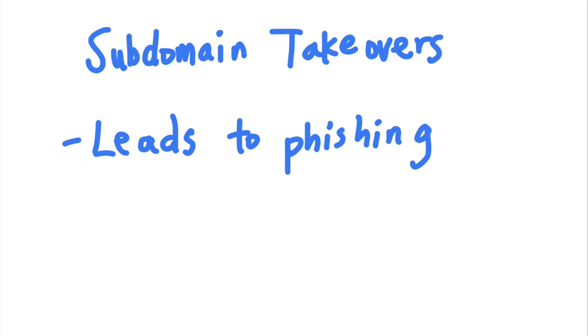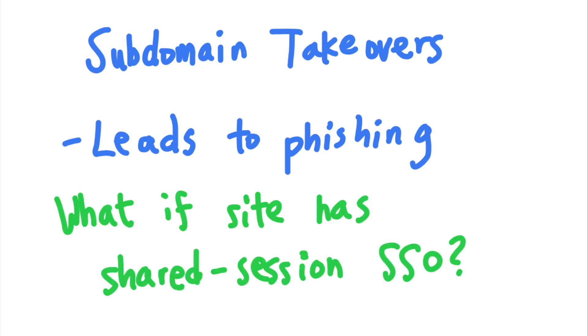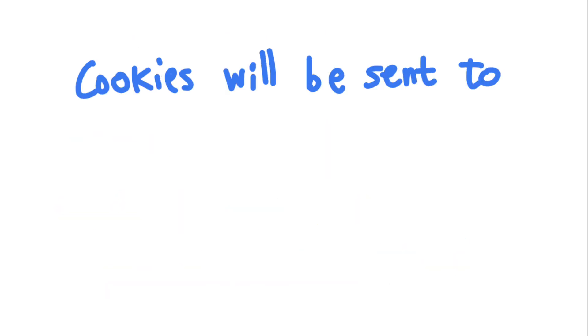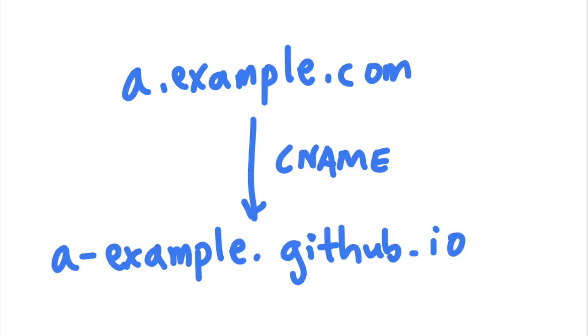Now imagine that example.com implements a shared session-based SSO system. The user's browser will send example.com's cookies to any subdomain of example.com, including this subdomain hosted on GitHub.